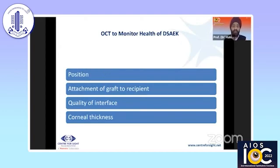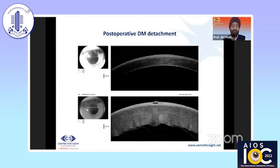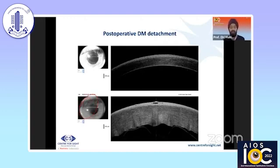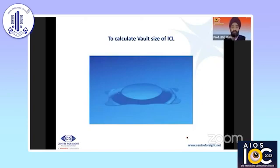Let us look at the OCT to monitor the DSAEK graft — you can see the graft here showing good outcomes. Moving from DSAEK to Descemet's detachment: a patient operated for cataract with persistent corneal edema was told by another doctor that nothing could be done. Had an OCT been performed, it would have picked up the Descemet's membrane detachment, and one can proceed to reattach it — I'll show you a video of the intraoperative setting of the Descemet's membrane back.